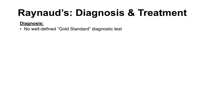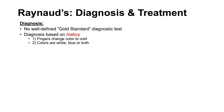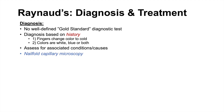Diagnosis of Raynaud's is not very straightforward — there is no well-defined gold standard diagnostic test. We diagnose based on history by asking: do your fingers change color when exposed to cold temperatures? Are the color changes well demarcated? Are there multiple colors — white, blue, or both? Answering no to both essentially rules out Raynaud's; answering yes to both confirms the diagnosis. We may also assess for associated conditions to determine primary versus secondary Raynaud's, and nail fold capillary microscopy can help distinguish between the two.